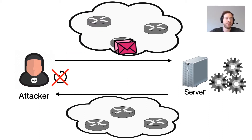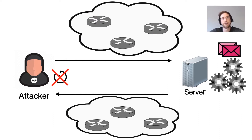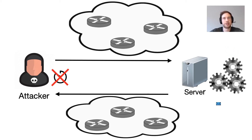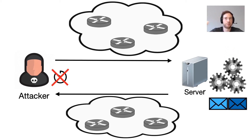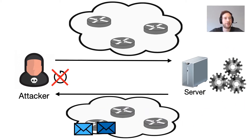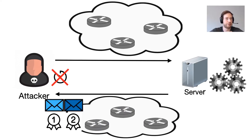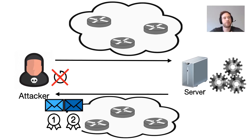Even if there is some network jitter, the requests still arrive simultaneously at the server and are processed in the same way. The response order again leaks information about which task was finished processing first.